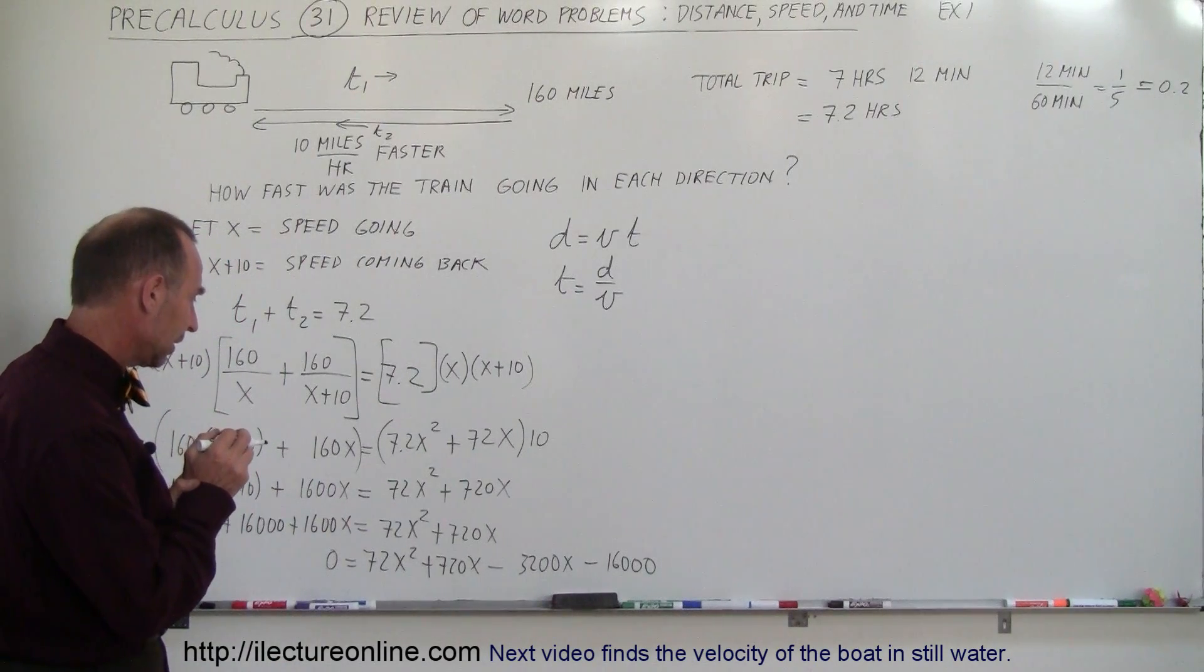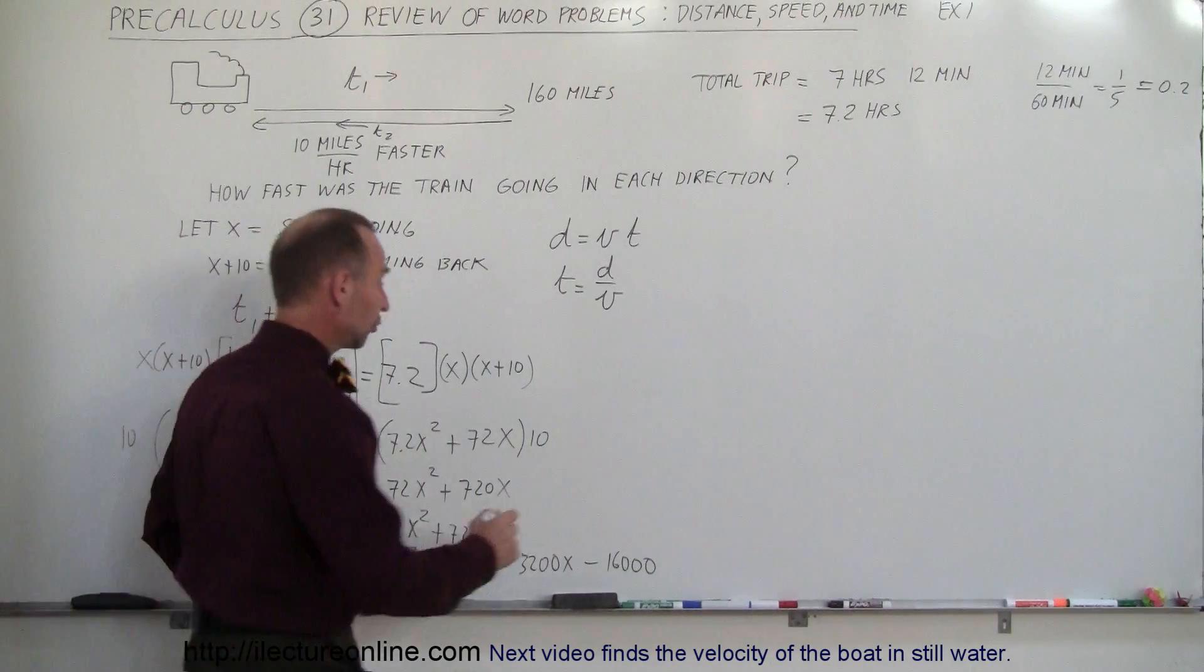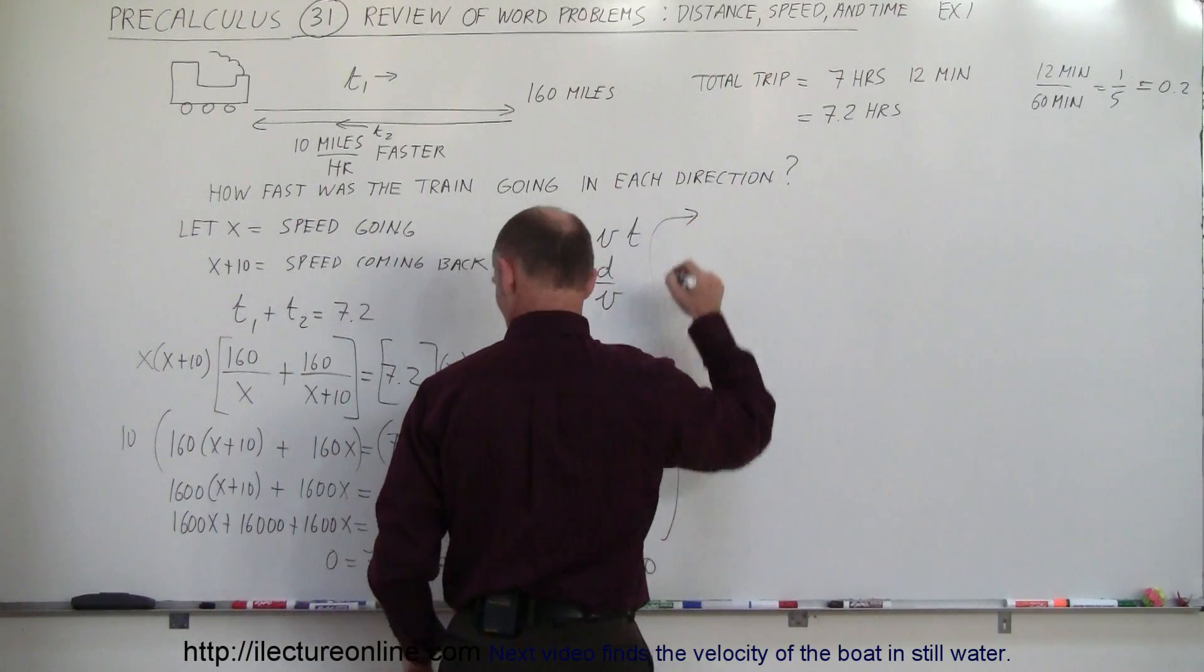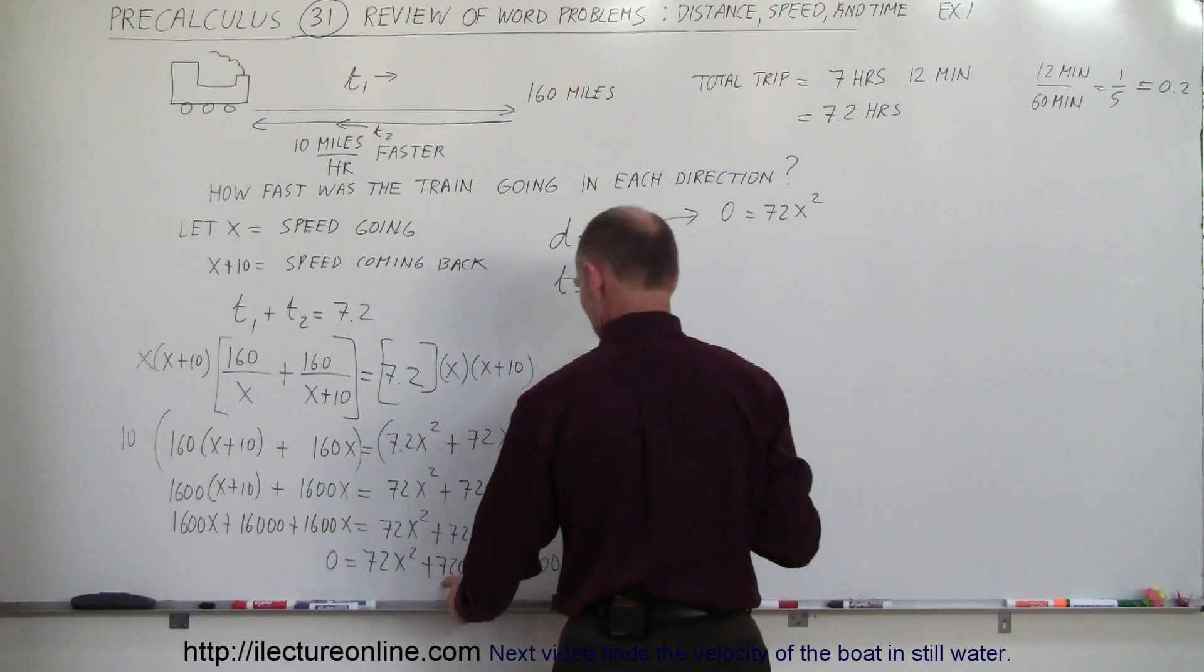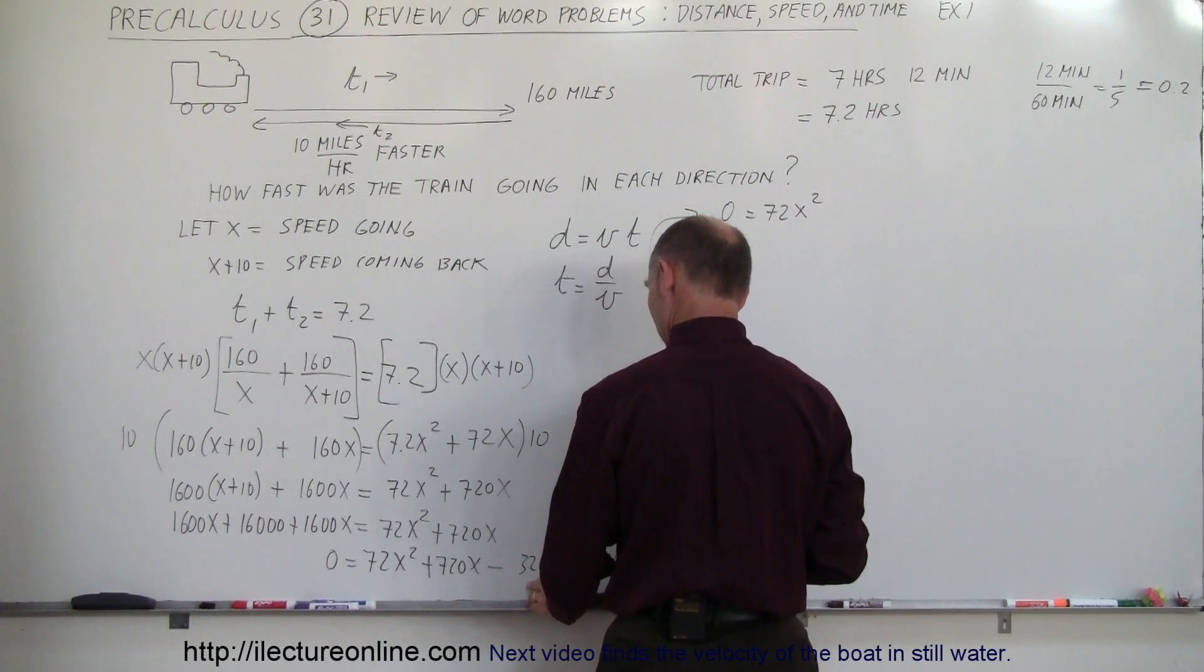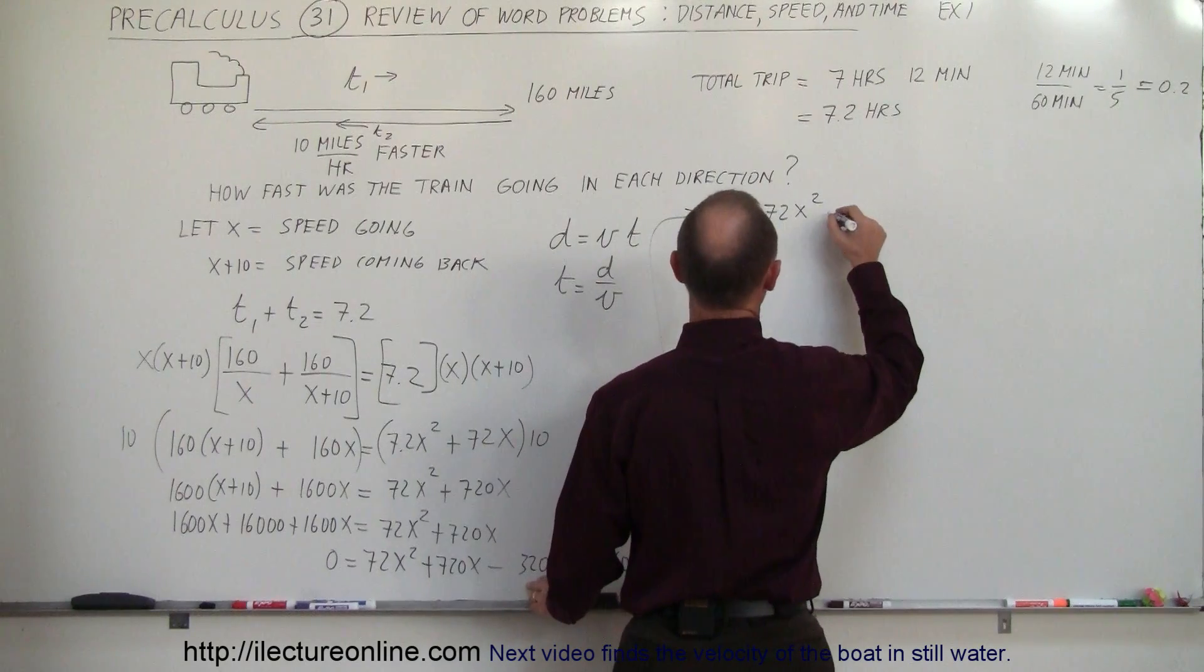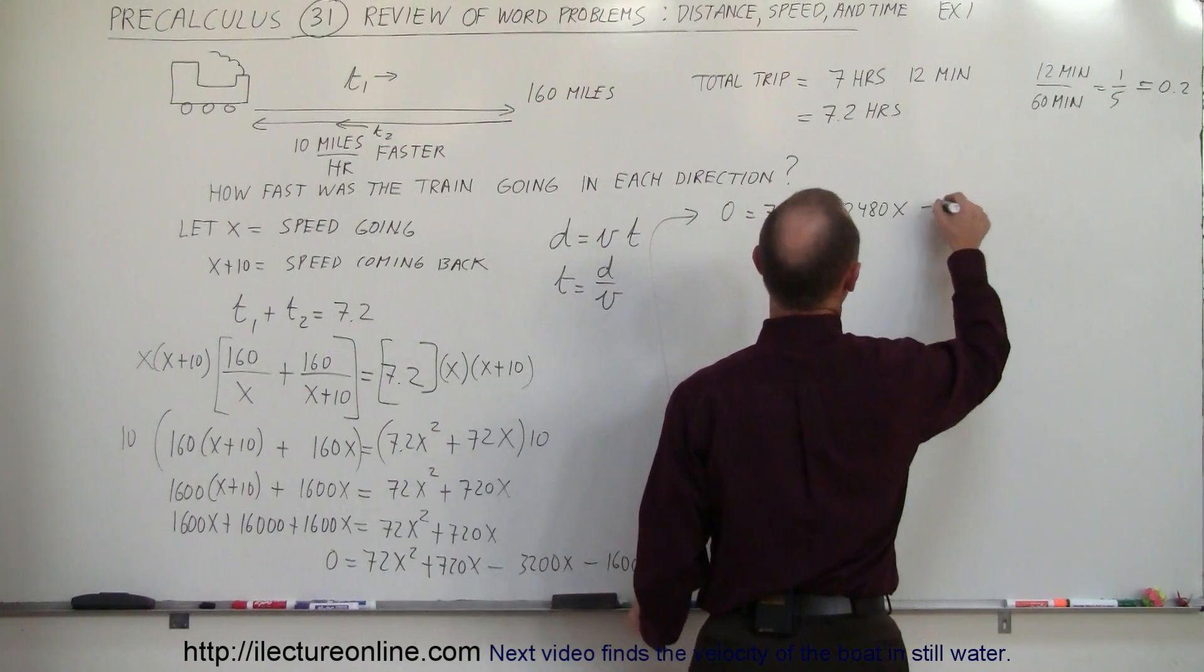Next, what do we want to do? Let's combine this a little bit. So we'll combine those two. We have 0 equals 72x squared. Subtract 720 from 3,200. That would be 2,480. So that would be minus 2,480x, and then minus 16,000.